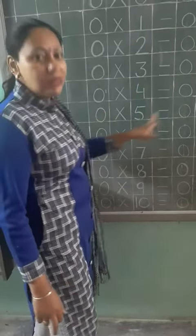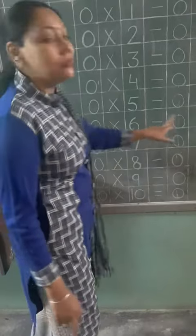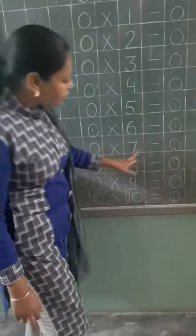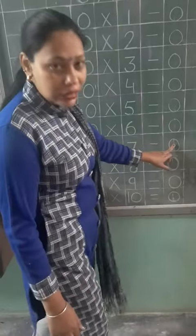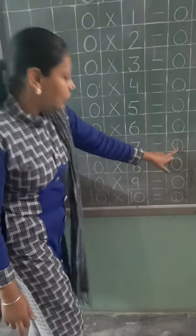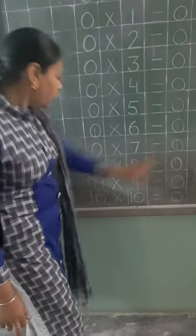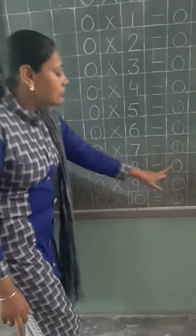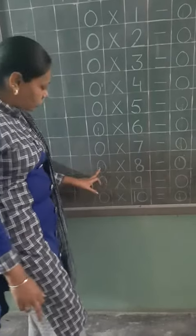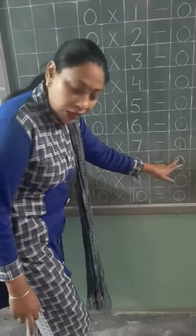Zero times five is zero. Zero times six is zero. Zero times seven is zero.